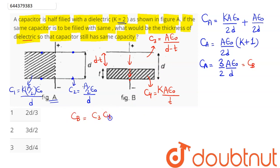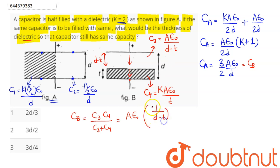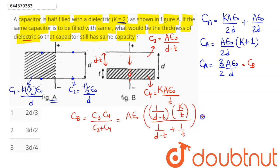The equivalent capacitance Cb in case B is given as C3·C4 divided by (C3 + C4). Taking A·ε₀ common, the numerator becomes k/t times 1/(d − t), and the denominator becomes 1/(d − t) plus 1/t. This Cb must be equal to Ca, which is 3A·ε₀/2d. The A·ε₀ terms cancel out.